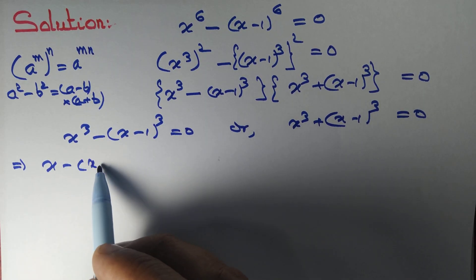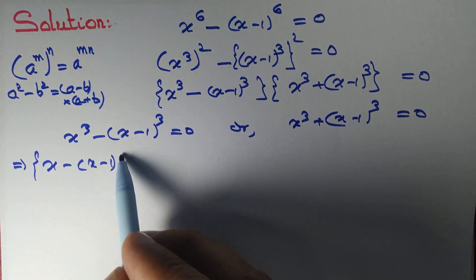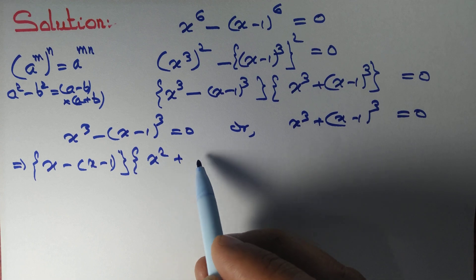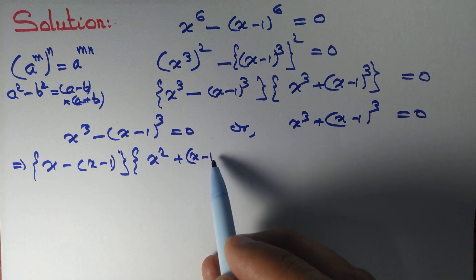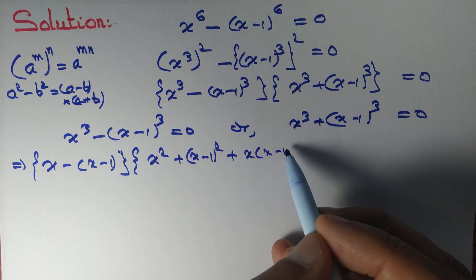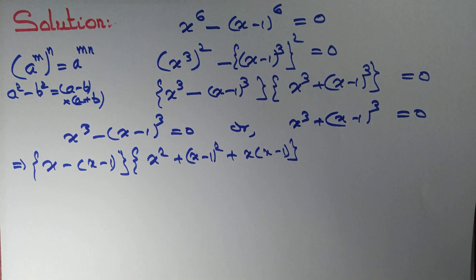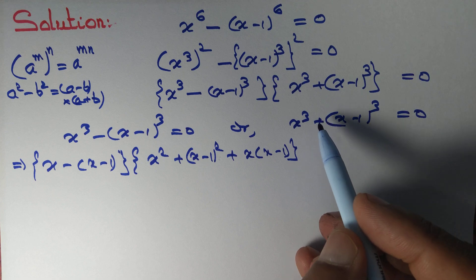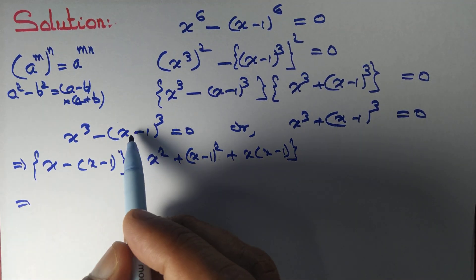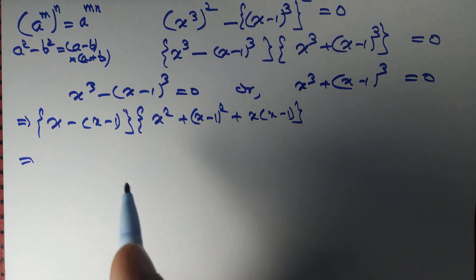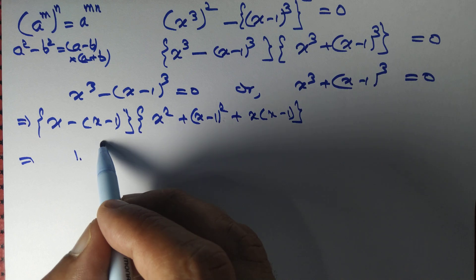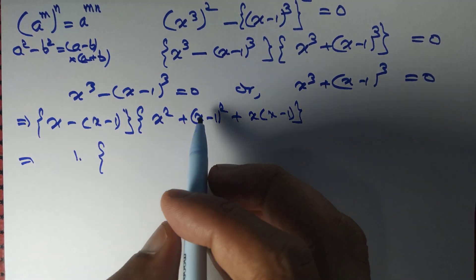So x minus x minus 1 — that's a minus b — whole thing into a squared plus b squared plus ab. Let's focus on x cube minus x minus 1 whole thing cube. So x and minus x will get cancelled, and we are left with 1 only.